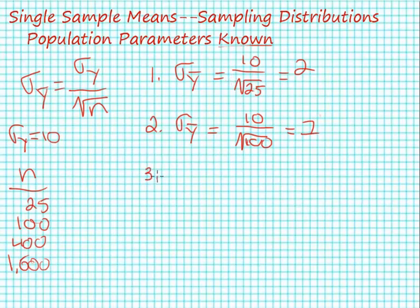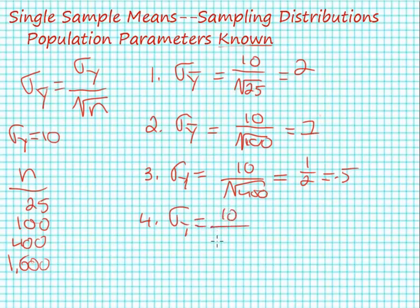Our third standard error is going to be equal to 10 divided by the square root of 400, which equals 0.5. And finally, our fourth standard error equals 10 divided by the square root of 1,600, which equals one quarter, or 0.25.